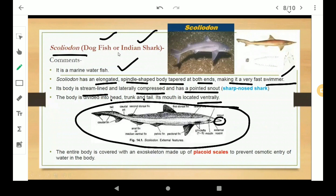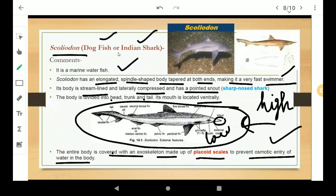The entire body is covered with an exoskeleton made of placoid scales to prevent osmotic entry of the water into the body. Osmotic means from outside the water level is high and inside its body is low, so there is no more water entering. So this was all about Scolidon or dogfish or Indian shark.